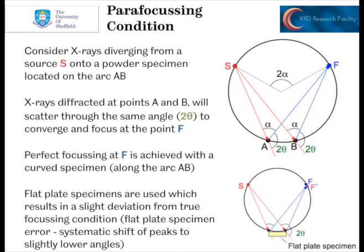The diffraction circle layout is built around a para-focusing condition. If we imagine X-rays coming from source S onto a powder specimen located on the arc AB, X-rays hitting points A and B will scatter through the same angle to converge and focus at point F. We would get perfect focusing if we have a curved specimen, so all the bits in between A and B would also focus onto point F. Obviously for most samples that would be very difficult. So in diffraction experiments we tend to use flat plane specimens, which results in a slight deviation from the true focusing condition — the outside parts of the sample are lower than the diffraction circle, so we would see peaks shifting systematically to slightly lower angles. We call this the flat plane specimen error.